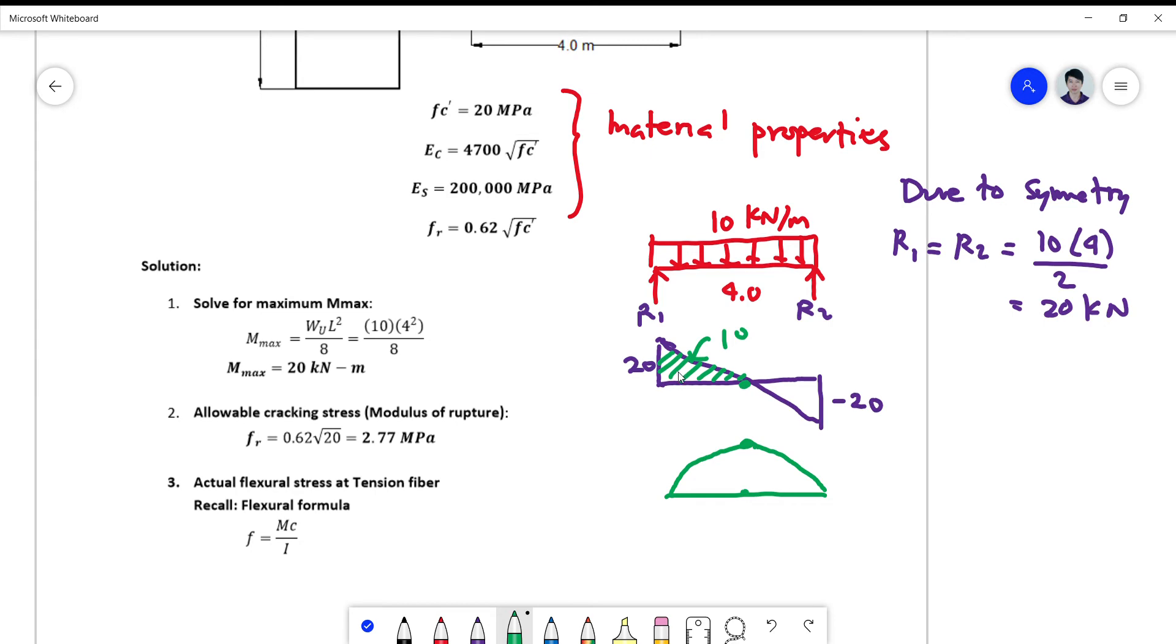So what's the area of this? The area of this diagram, area of the shear diagram, is equal to 1/2 times 20 times 2. So the area now is simply equal to 20 kilonewton meter. Or you can readily solve this moment, the maximum moment here, by simply using the formula wl squared over 8.